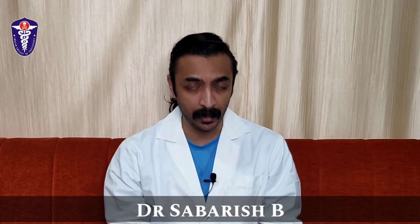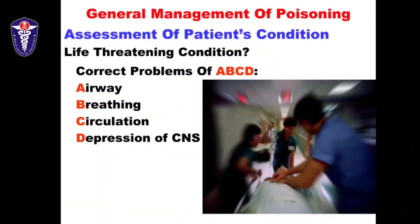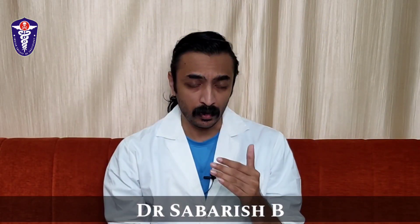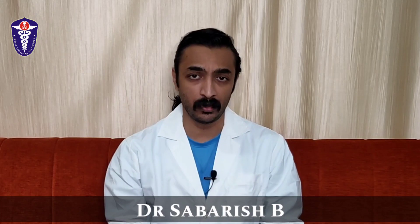A for airway — the assessment and management of airway. B for breathing. C for assessment and management of circulation. And D is whether there is any depression of the CNS. We will come on to the various aspects of what and how we assess each of these things.